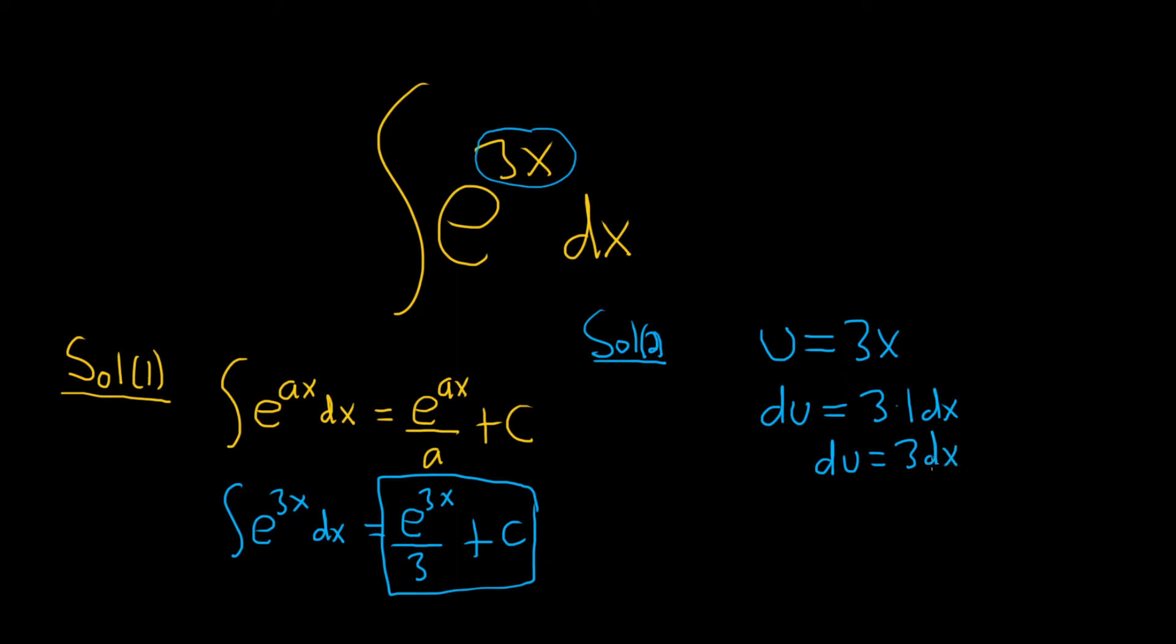So after we do this, we have to make what we have here look like what's in our integral. You'll notice there's no 3 inside our integral. So what we do is divide by 3 to make this match. So du over 3, we'll write that as 1 third du, and that's equal to dx.